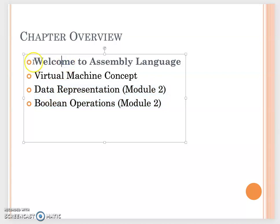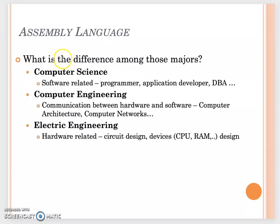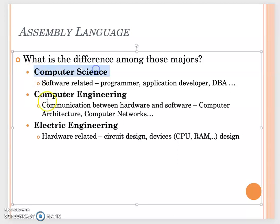Before we go over assembly language, I want you to think about the difference between three majors: computer science, computer engineering, and electrical engineering. Most of you taking this class will transfer into a CS major, some into computer engineering, and a few may be interested in electrical engineering. Think about what's different between these three majors — feel free to pause the video and think about it before moving forward.